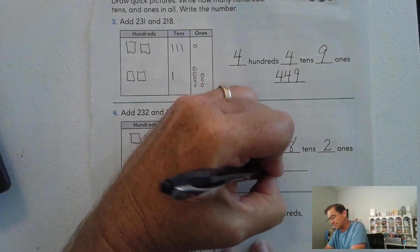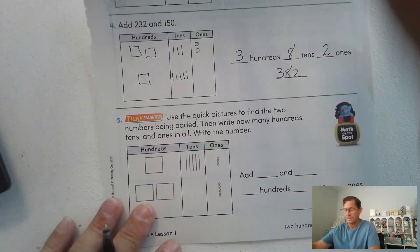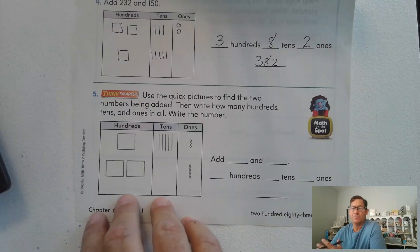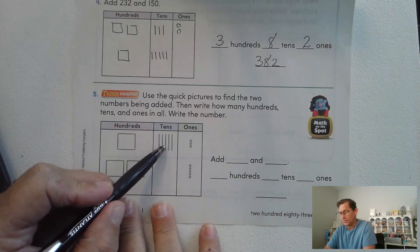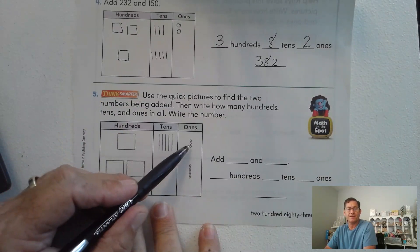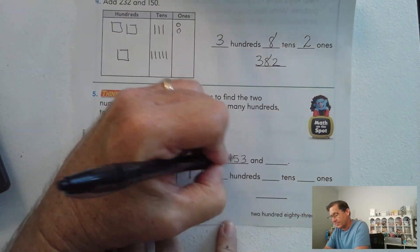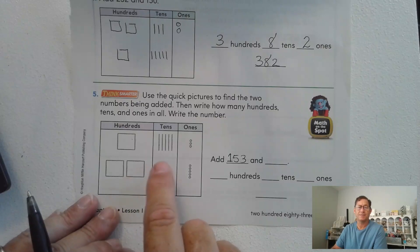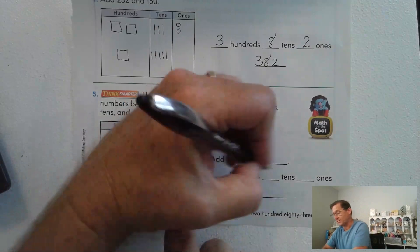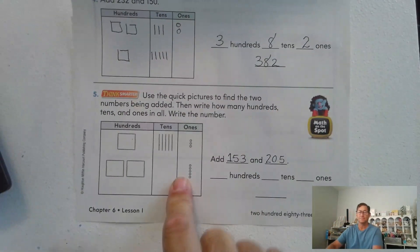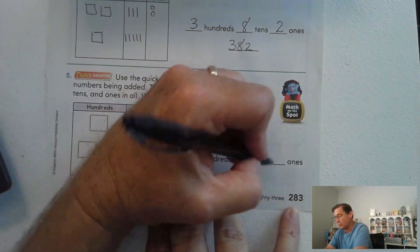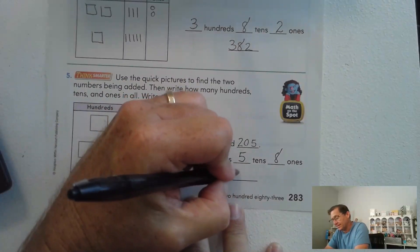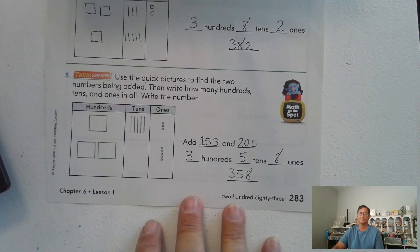Number five: use the quick pictures to find the two numbers being added, then write how many hundreds, tens, and ones in all, and then write the number. All right, so this first number we have 100, one, two, three, four, five, and three, so we have 153. Plus the 100, 150. In the second one we have 200, no tens, and two, four, five ones, so we have 205. So how many ones do we have total? We have five, eight ones. We have five tens and we have three hundreds. So we have 358.